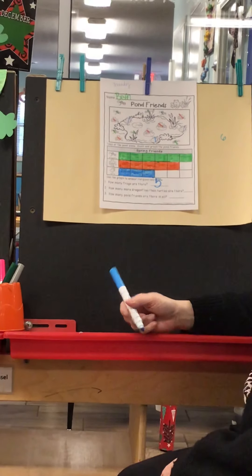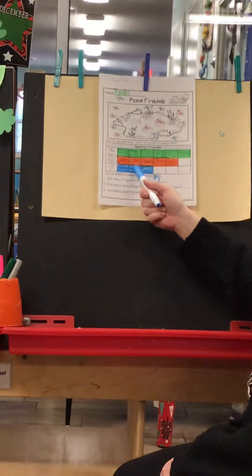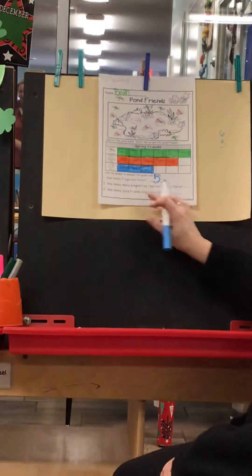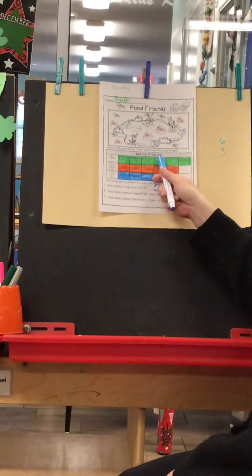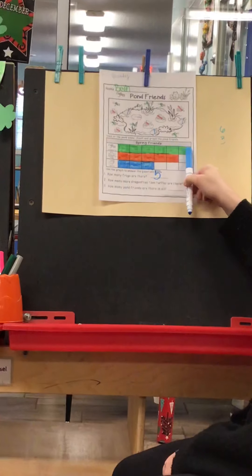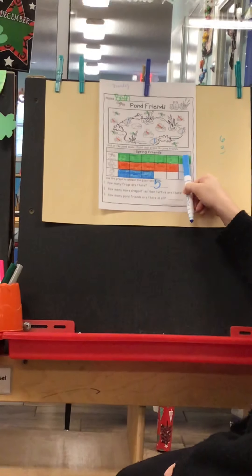And how many turtles there are. One, two, three. So to find out the answer, you can see on our graph there's three turtles, but there's this many more dragonflies. So how many more are there?